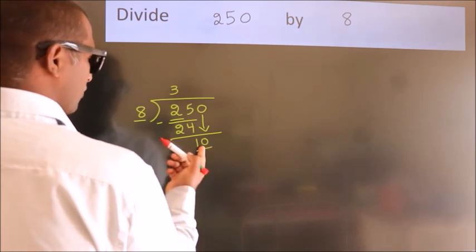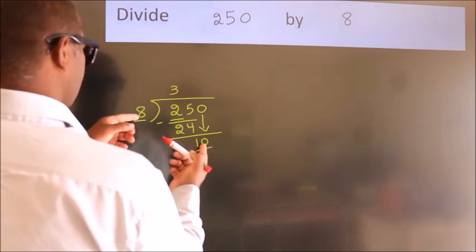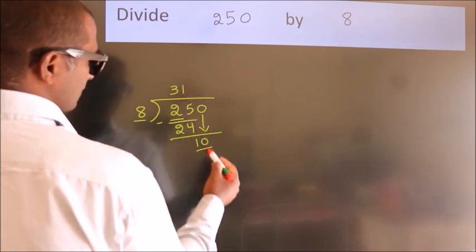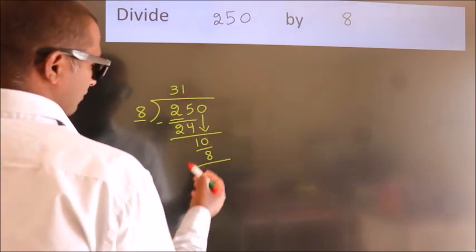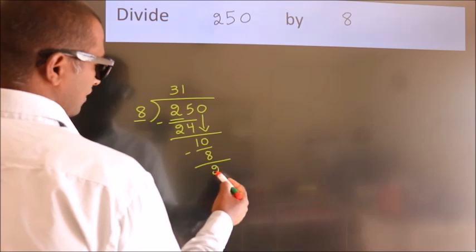A number close to 10 in the 8 table is 8 ones, 8. Now we subtract. We get 2.